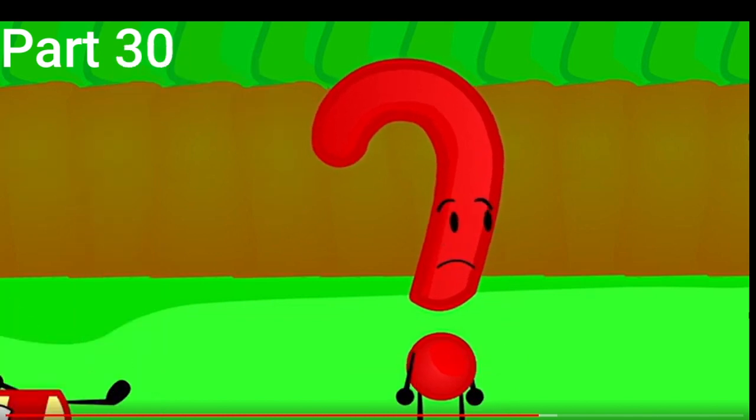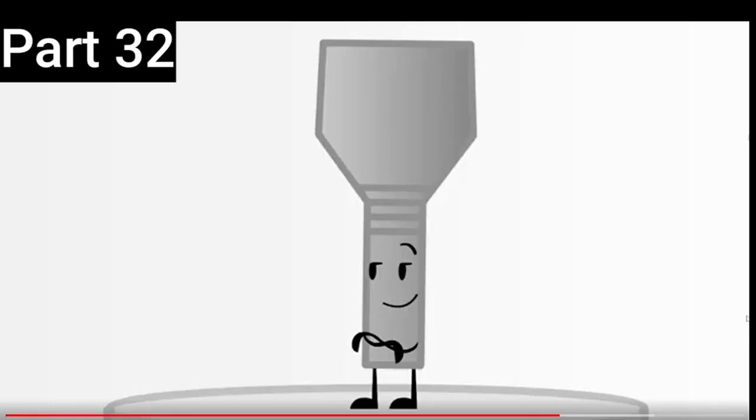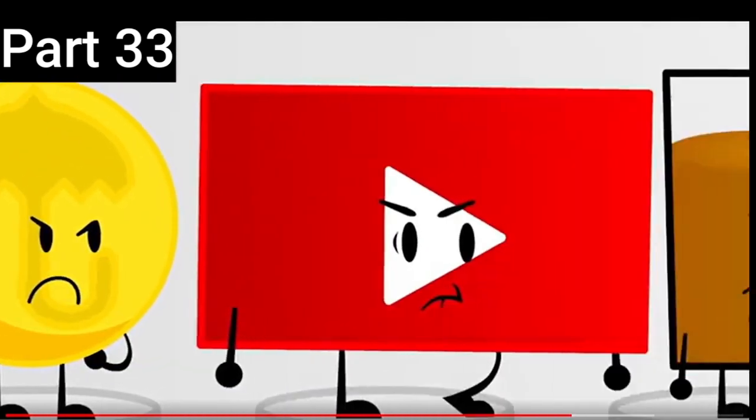And that means that Question Mark and B are the team captains of this season. Everyone else, get to the hotel. Wait. B was still in? After all that, the first five to get hit were Penny, Stick, Delgona, YouTube Icon, and Soda. So they are up for voting.